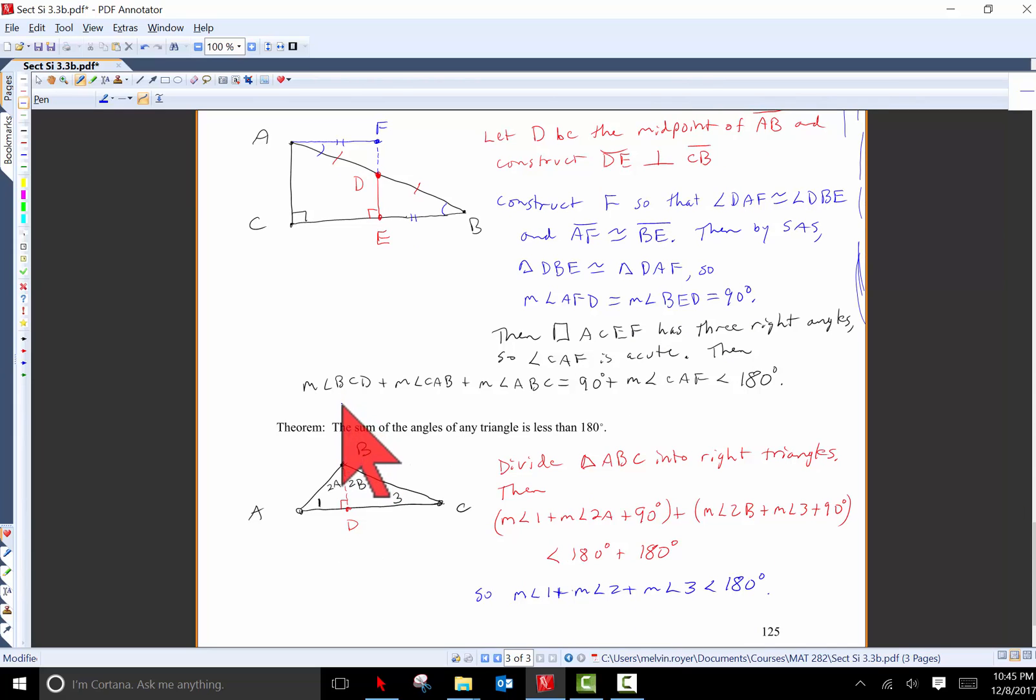So then if I add the three angles in triangle ABC, the measure of angle BCA plus the measure of angle CAB plus the measure of angle ABC. So the first angle is a right angle and the second two angles are the same thing as angle CAF because it's composed of two pieces, the second of which is congruent to the angle here at point B. But angle CAF is acute and so I have 90 plus something less than 90 has to be less than 180.